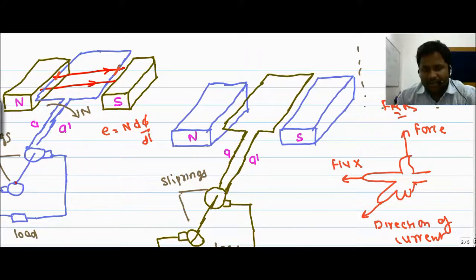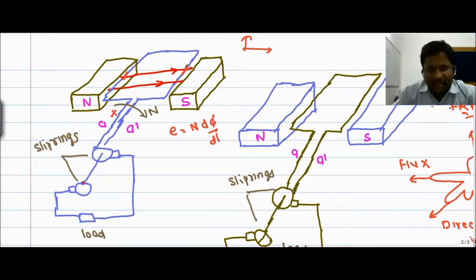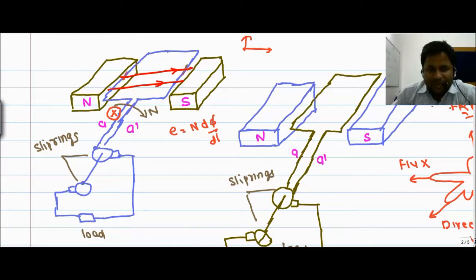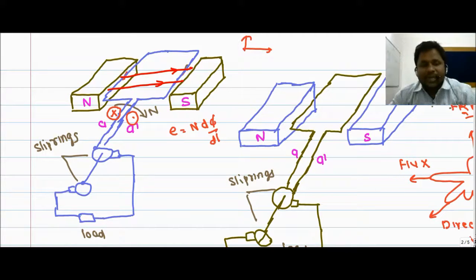Using this rule, we can see that the flux is moving in this fashion, the force is in the upward direction, and the current enters at conductor A. So coil A experiences a current entering in nature. Similarly, coil A dash experiences a force in the downward direction. With the help of Fleming's right-hand rule we can easily determine the direction of induced current or induced EMF in the armature winding located in a constant magnetic field.